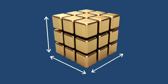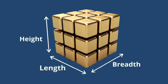A cube has three dimensions: length, breadth, and height. In a cube, all dimensions are equal in size. Let's suppose it has 3 cm length, 3 cm breadth, and 3 cm height.